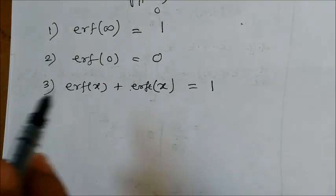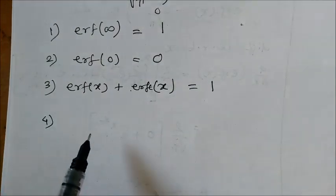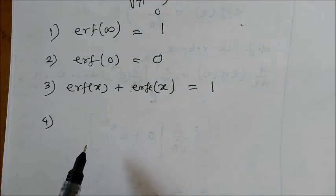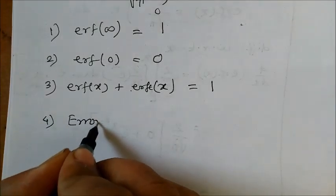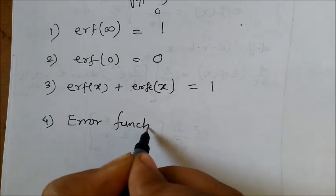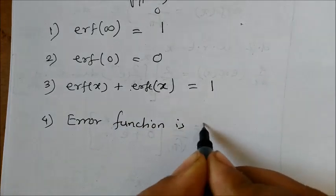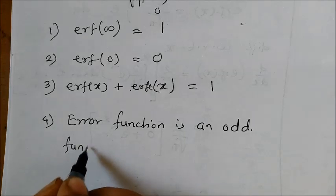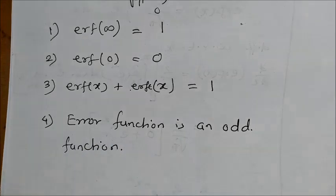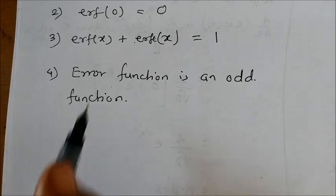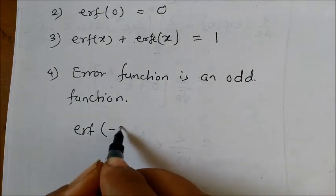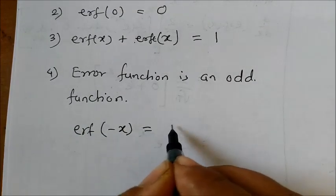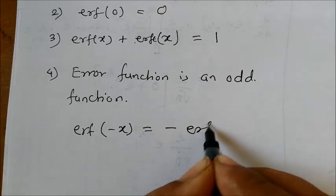Now the fourth important property of error function, that error function is an odd function. Now what do you mean by this? It means that if I take erf of minus x it will be minus erf of x. So that's why it is called as an odd function.